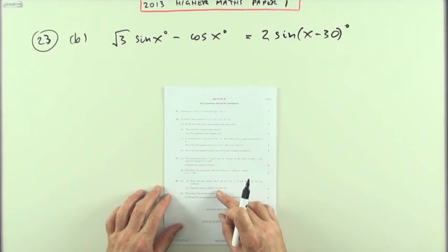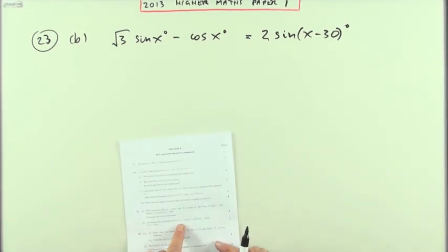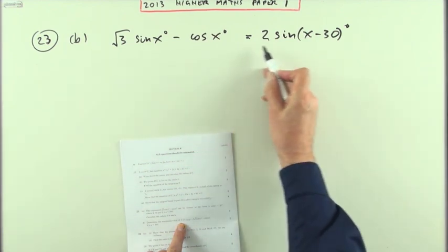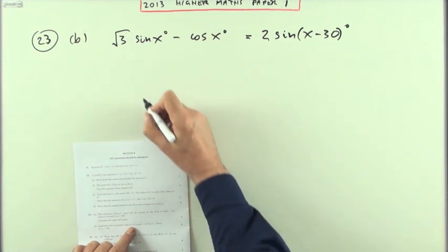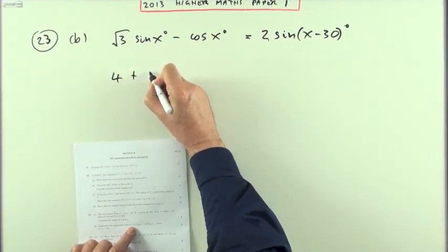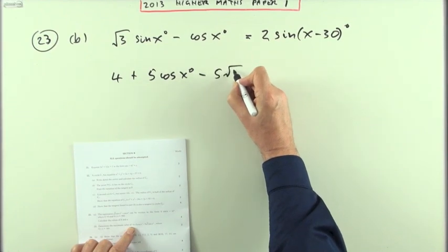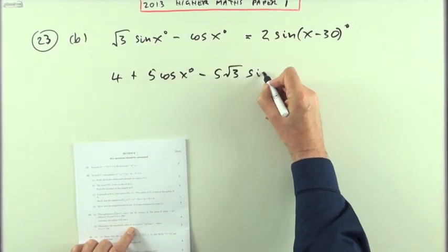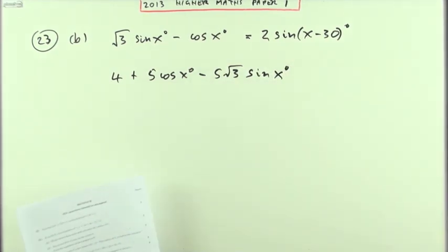Now part a only asked for k and a. Part b says what's the maximum value of this. I've just transferred this back up here. This is what this turns into. Now part b says what's the maximum value of 4 plus 5 cos x minus 5 root 3 sine x.